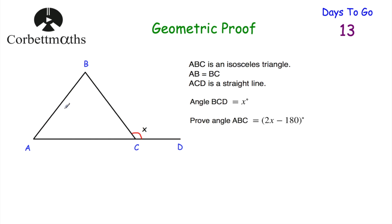Our next question: we've got triangle ABC and we're told it's an isosceles triangle, with AB equal to BC. We're told that ACD is a straight line, angle BCD is equal to X degrees, and we've been asked to prove that angle ABC is equal to 2X minus 180. Feel free to press pause and try that now.